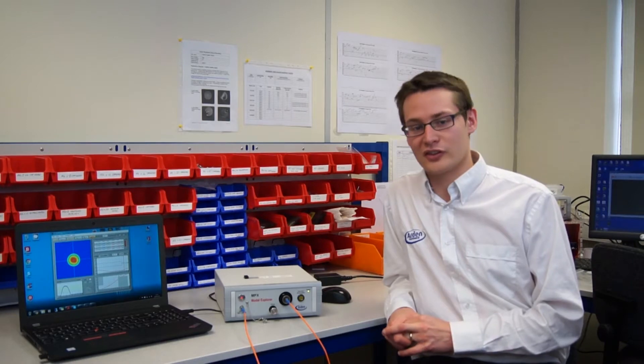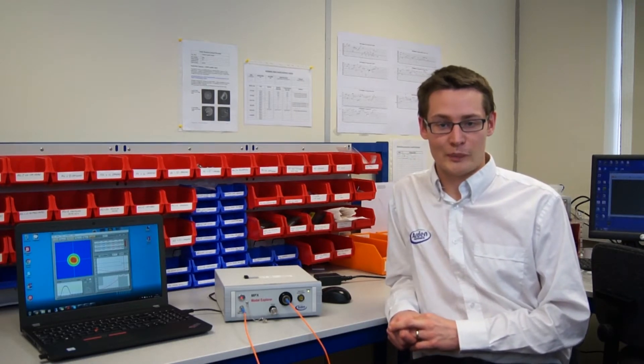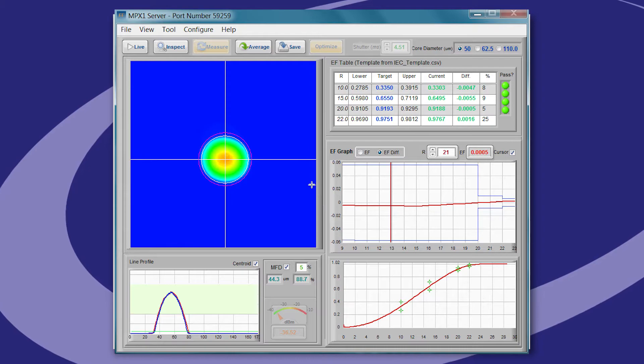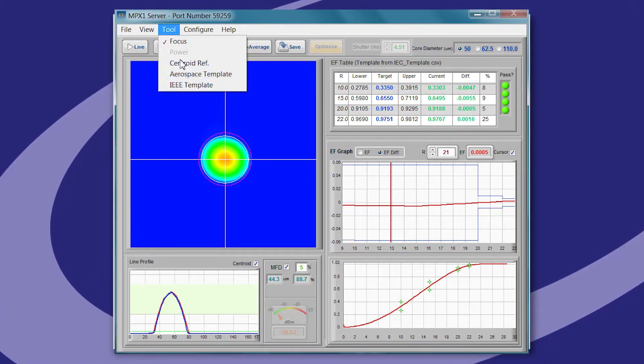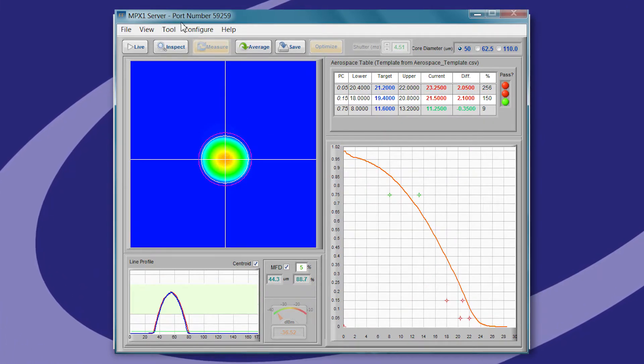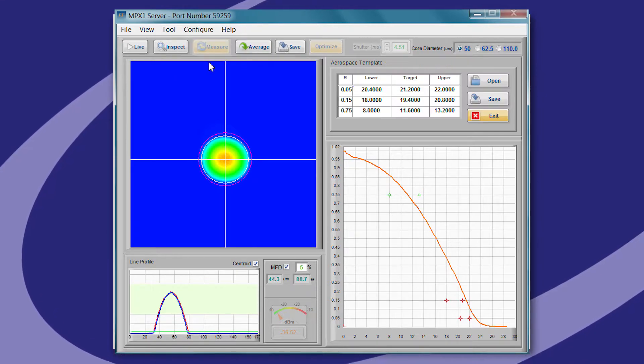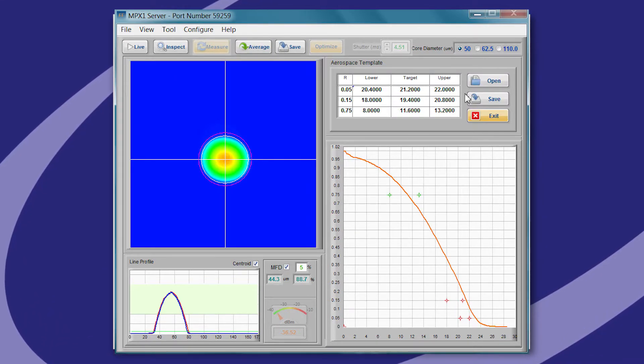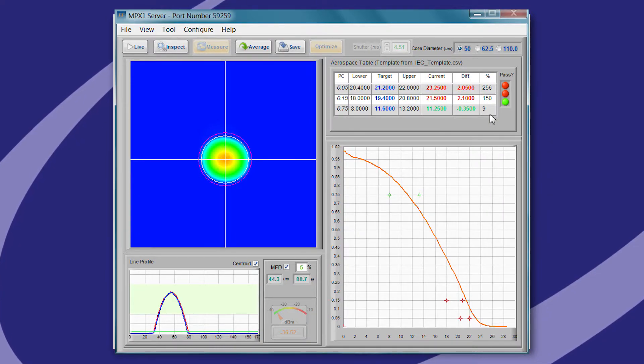Another change to the software is better support for aerospace users. It's now possible for aerospace users to specify maximum and minimum radial widths for a given set of intensities. For example, this 8585 specification shows intensity gates at 5, 15, and 75 percent intensity levels.